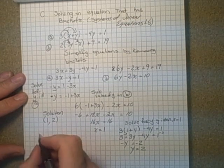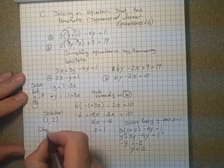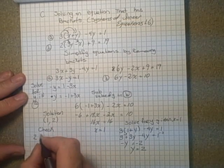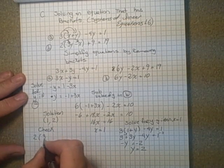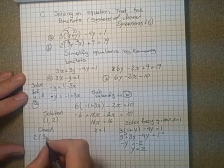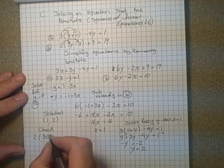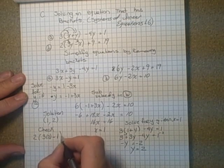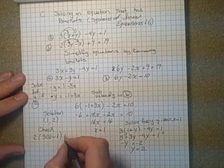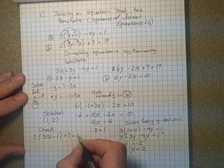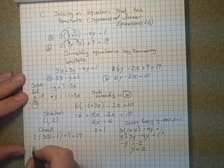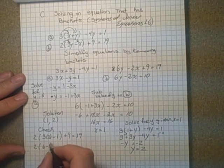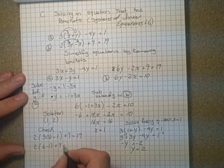Do a quick check. See how that works. So 2 times 3 in y is 2 minus x, which is 1 in the brackets, plus 9 equals 19.